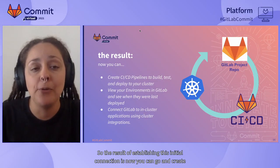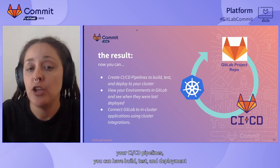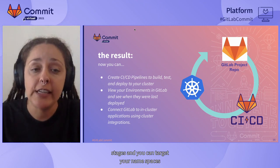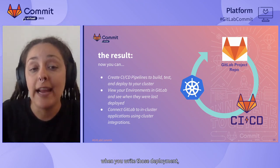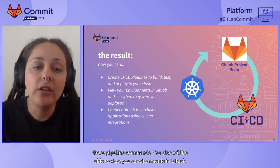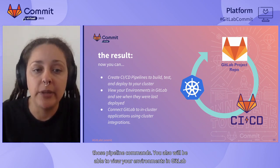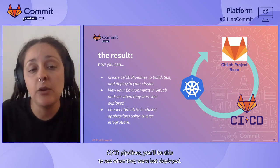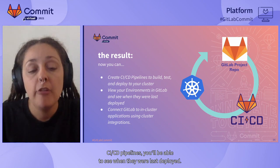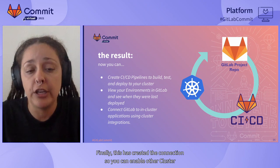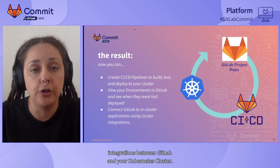The result of establishing this initial connection is that you can now go and create your CI/CD pipelines with build, test, and deployment stages, and you can target your namespaces when you write those pipeline commands. You'll also be able to view your environments in GitLab, and once you've started running those CI/CD pipelines, you'll be able to see when they were last deployed. Finally, this connection enables other cluster integrations between GitLab and your Kubernetes cluster.